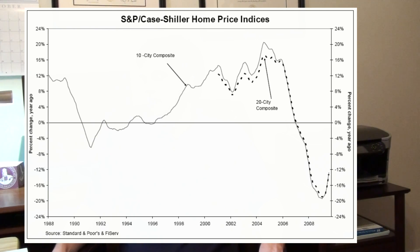This caused a domino effect. Mortgage-backed securities lost value as their underlying collateral, people's homes, became less valuable. Their derivative securities declined as well.